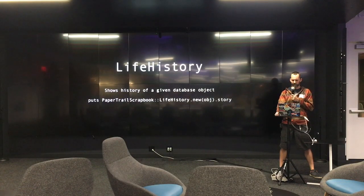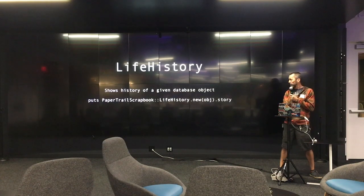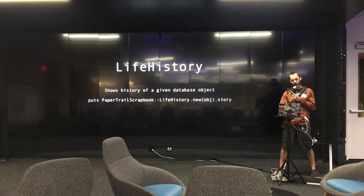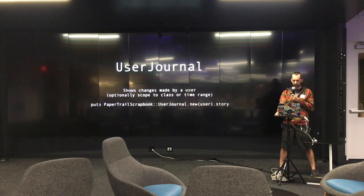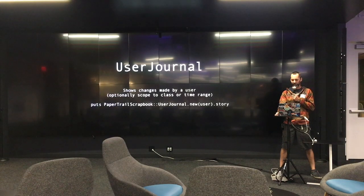Papertrail Scrapbook has two modules. The first is LifeHistory, which essentially shows a history for a given database object. You just call `PaperTrailScrapbook::LifeHistory.new(object)` and then call the `story` method on it. The second module is UserJournal, which shows changes made by a user. You can optionally scope it to look for changes to a specific class and/or scope your inquiry to a time range.